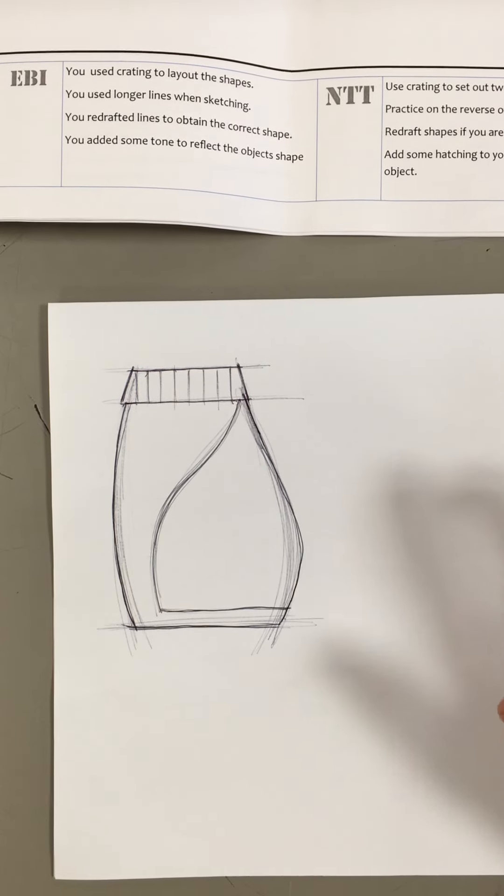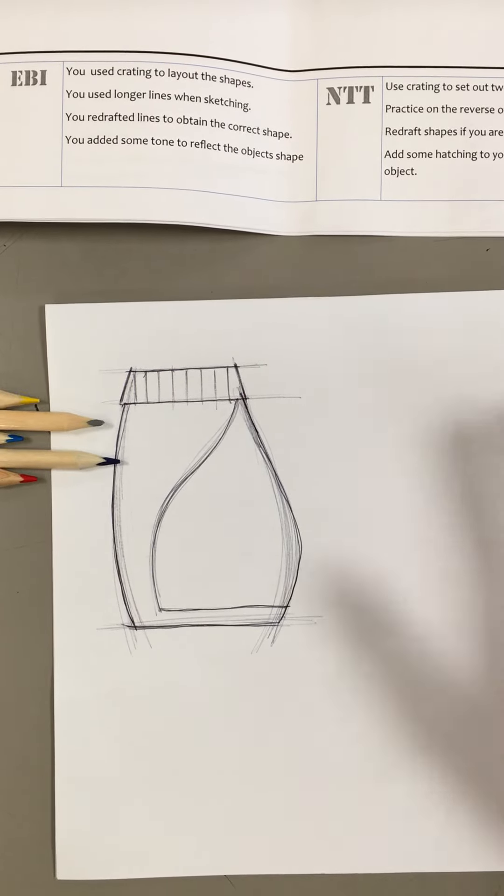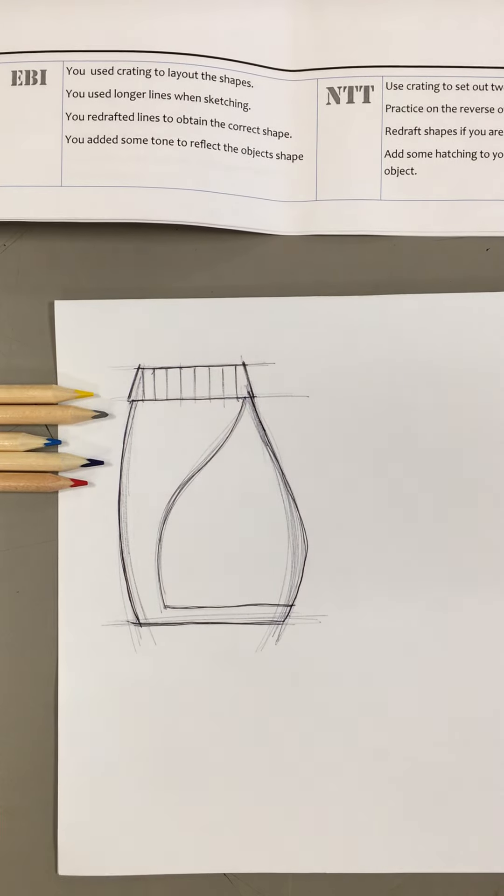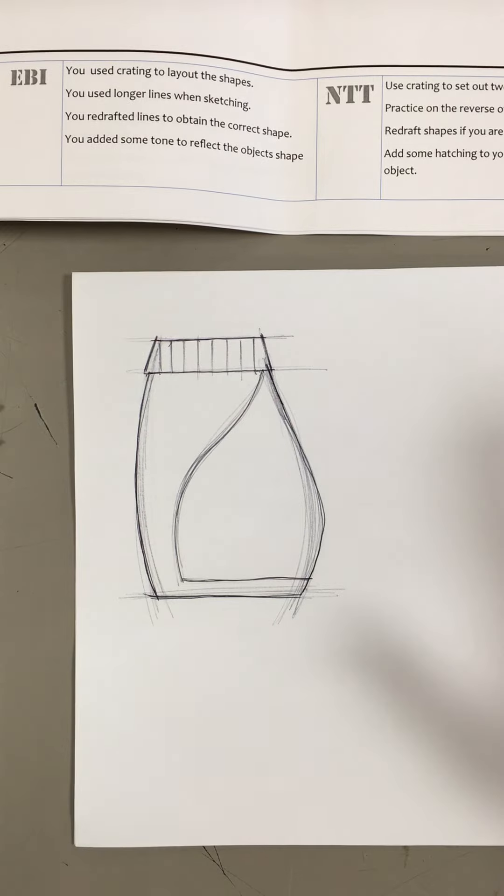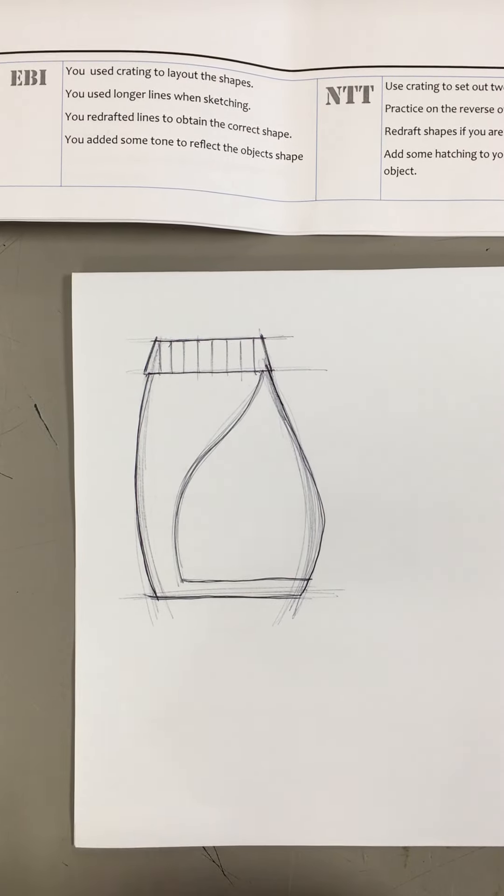Coming back now, I've got some pencil crayons that I can start putting a little bit of color or tone onto it. I'm not going to go crazy with this because I don't want to spend hours on it. I just want to give an indication of maybe the shape or color that I'd use if it was an actual product.